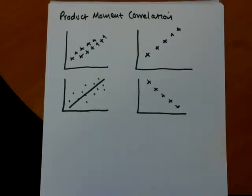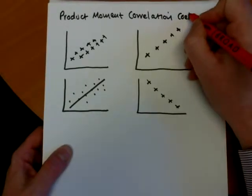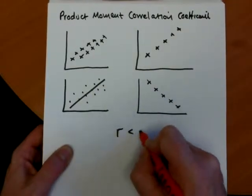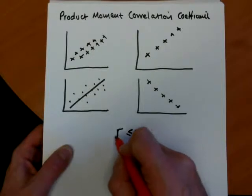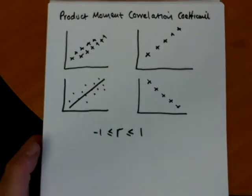Now at AS level we go a bit further and one of the first things we learn to do is to calculate what's called the product moment correlation coefficient. This is a numerical value which we call r and it lies between 1 or it can be equal to 1 or greater than or equal to minus 1.